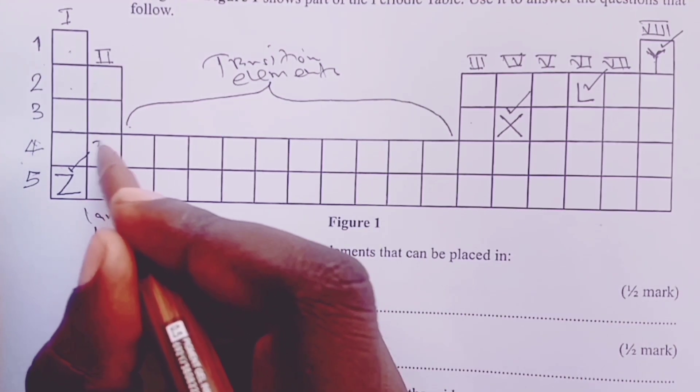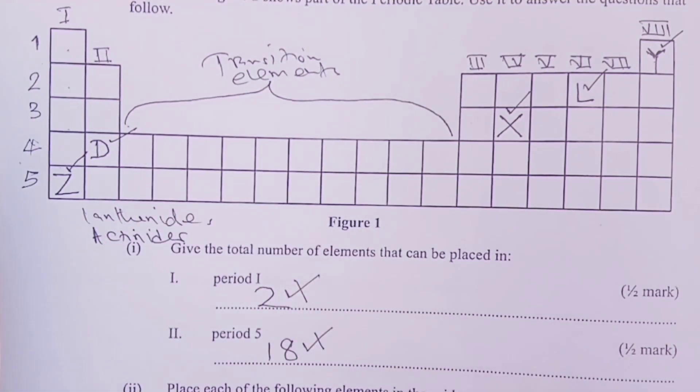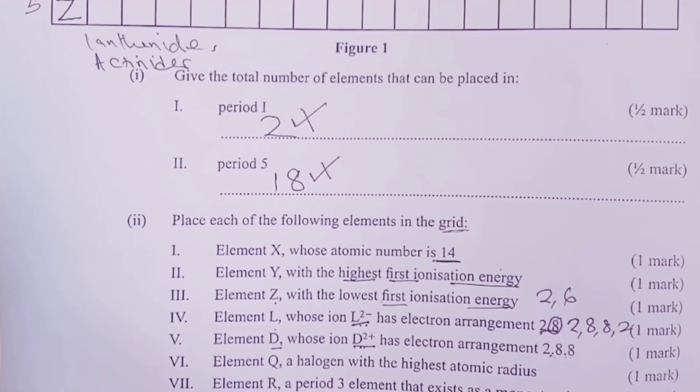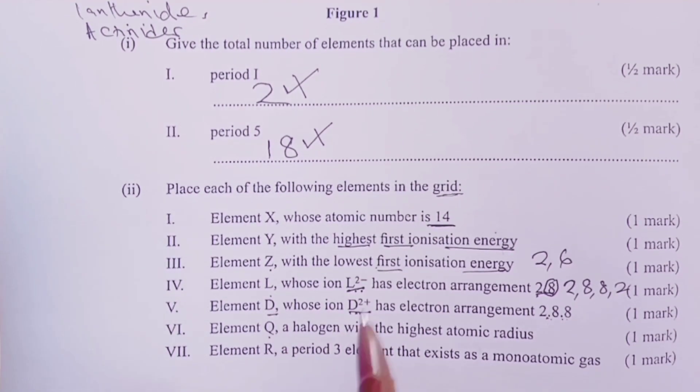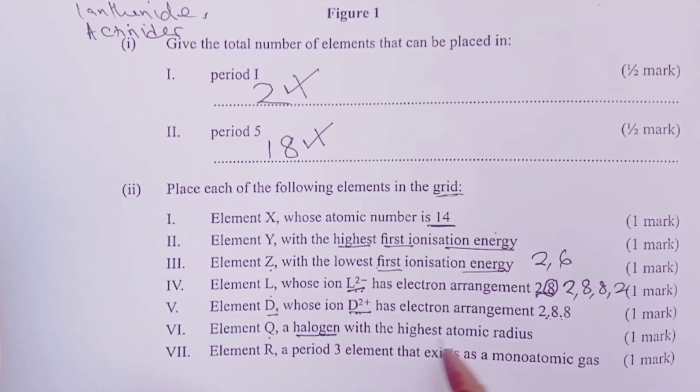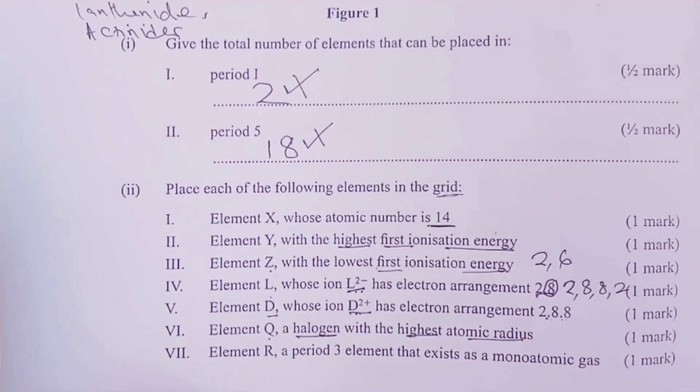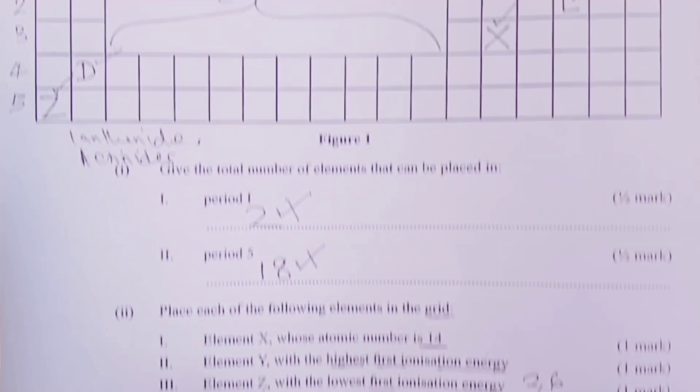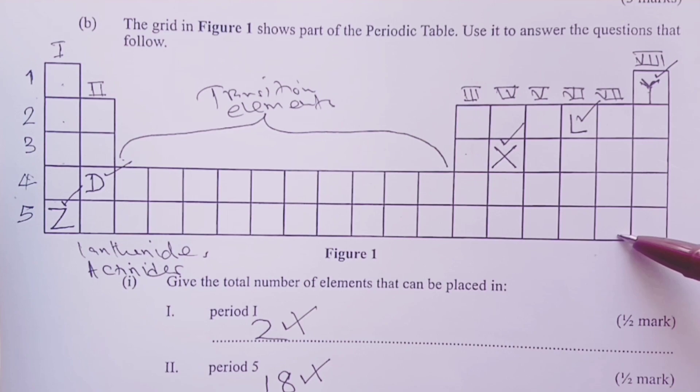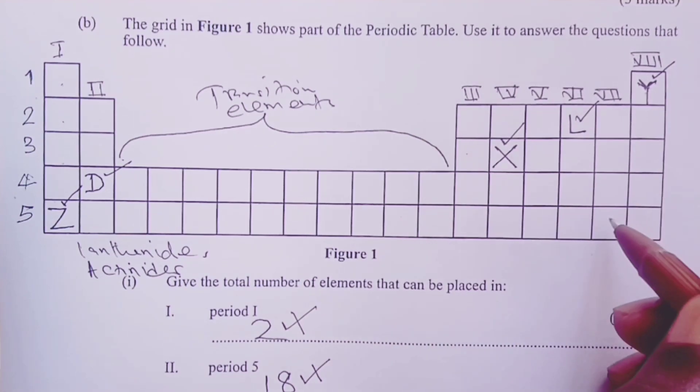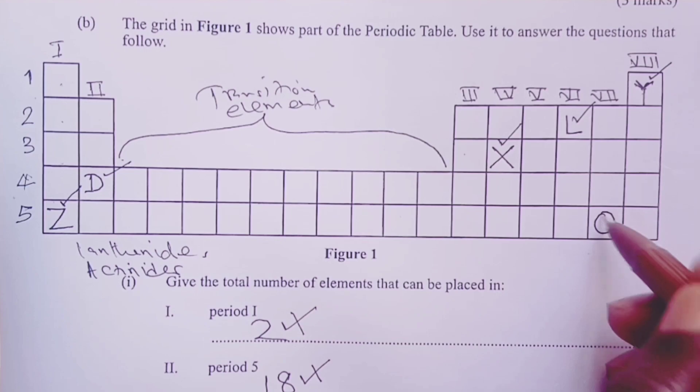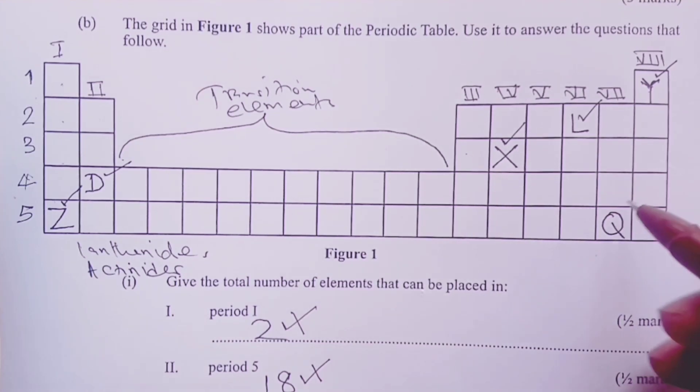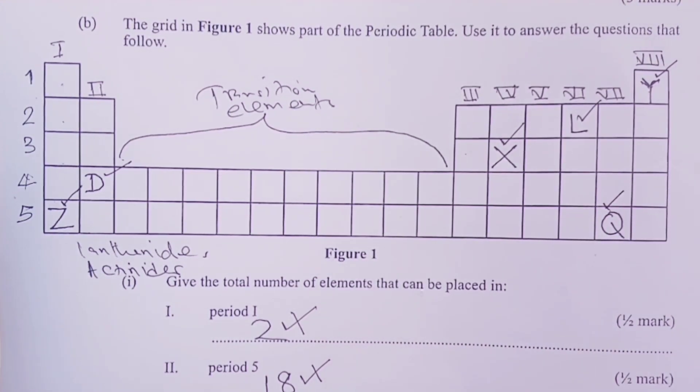We are asked as well to place element Q. This is a halogen with the highest atomic radius. This was actually the easiest question. Halogens occupy group 7, and the one with the largest or highest atomic radius would be down here because atomic sizes increase down the group. That would be Q for the next mark.